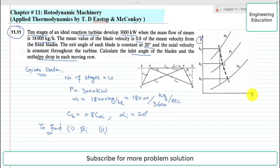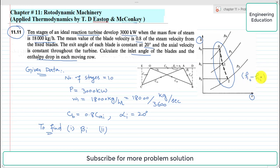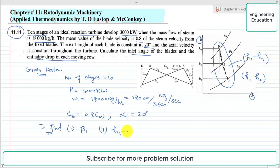From the h-s diagram — the enthalpy-entropy diagram — the enthalpy drop for a complete stage is h0 minus h2. From 0 to 1 is the enthalpy drop for the fixed blades, and from 1 to 2 is the enthalpy drop for the moving row. So we have to find h1 minus h2, the enthalpy drop in each moving row, keeping in mind that there are 10 stages in this reaction turbine.